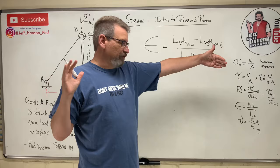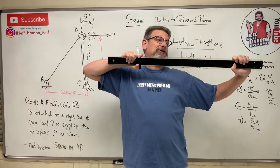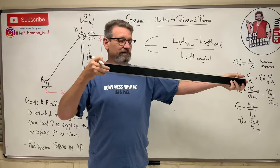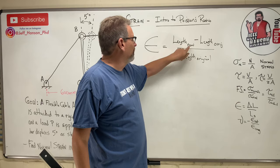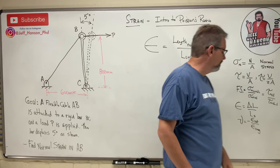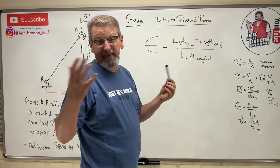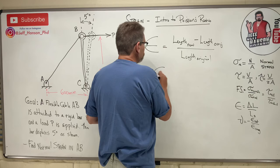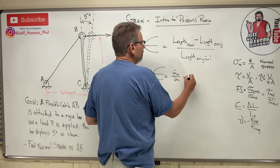So take the new length — the length after you put a force on it and stretch this beam — and subtract the original length before you pulled on it. That leaves you the change in length, delta L, and then divide that by the original length. The units are a little interesting: length is in inches and inches, or meters and meters if you're metric, so the units for strain are inches per inch or meters per meter.